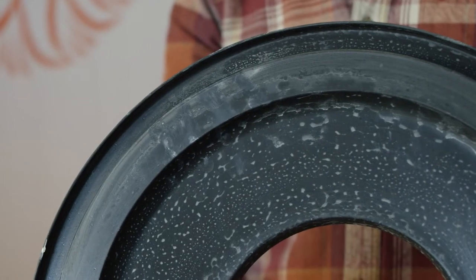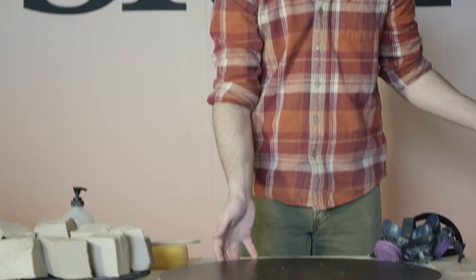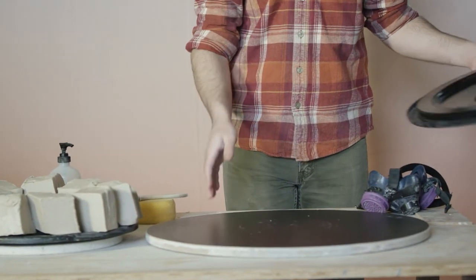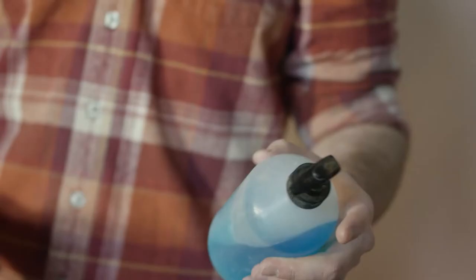To cast the plaster bats you need first and foremost a non-absorbent plastic coated flat surface. You're also going to need a brush or a sponge and some dish soap or mold release.